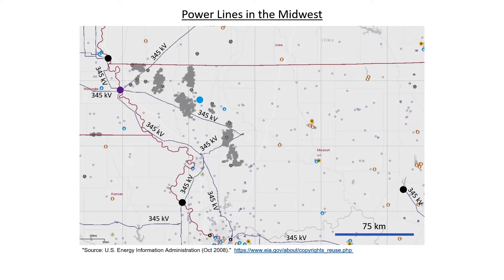Let's now take a look at the high voltage transmission lines here in the region. In this region, the highest voltage is 345 kilovolts. These 345 kilovolt lines mainly run to and from the big power plants that I highlighted earlier. The turbines inside the power plants, though, don't generate electricity at 345 kilovolts. Typically, turbines will operate in the neighborhood of 10 to 20 kilovolts. So all these power plants have step-up transformers just next to the power plant in order to get the high voltages needed for transmission.